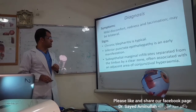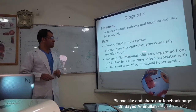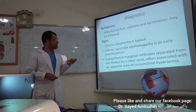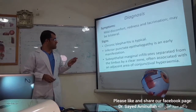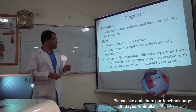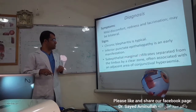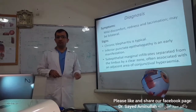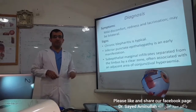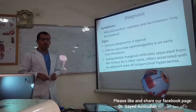Another finding that confirms the diagnosis is the subepithelial marginal infiltrate. These marginal infiltrates, together with the other signs, confirm our diagnosis. Chronic blepharitis is present, and sometimes in the inferior part of the cornea we see punctate epitheliopathy. Along with these, there is a subepithelial marginal infiltrate. This infiltrate is separated from the limbus by a clear zone, and the adjacent conjunctiva is hyperemic.